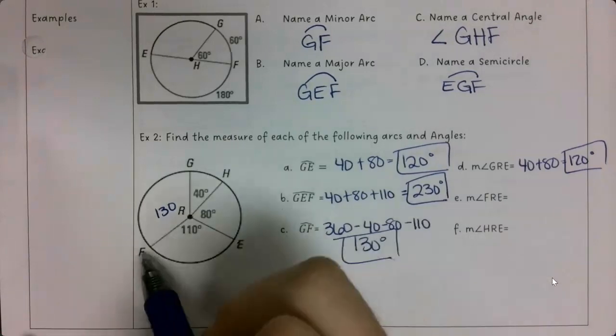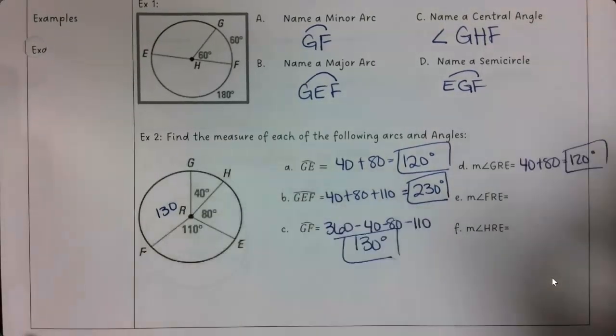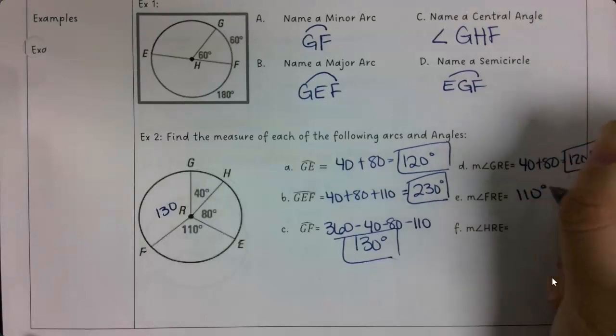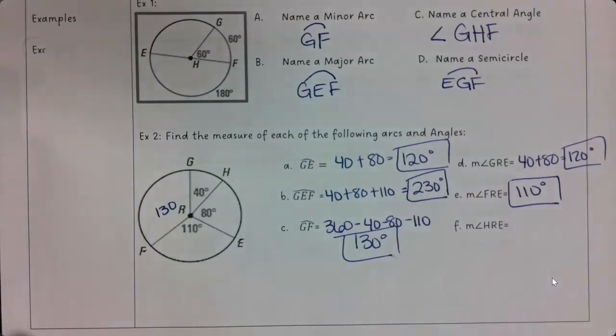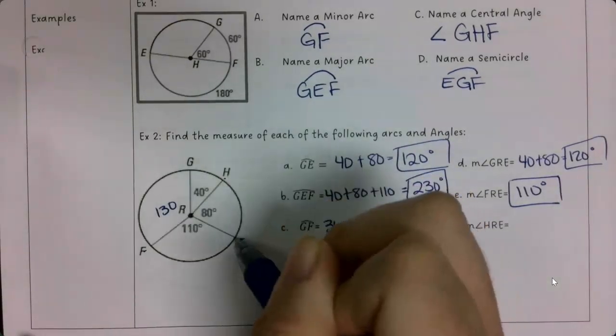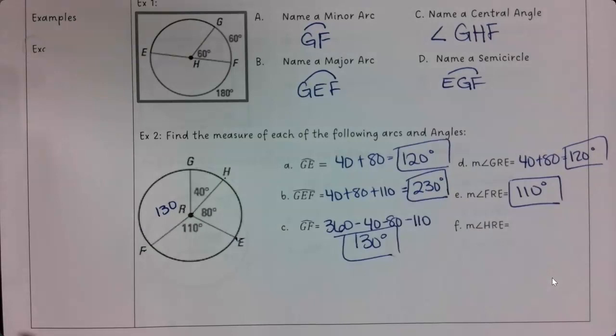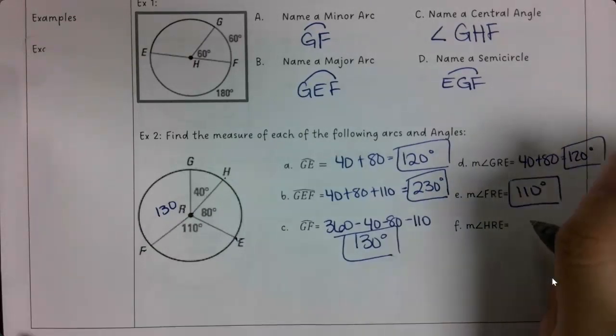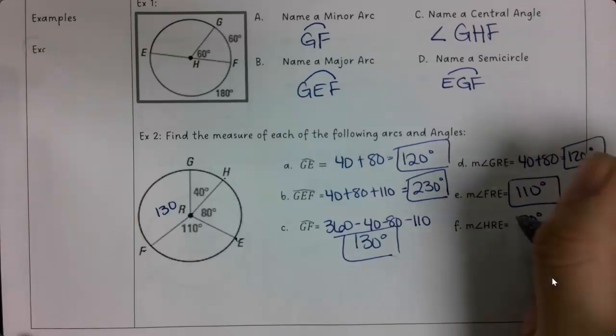Then the next one I have is FRE. So from here, here, here, that one's just labeled 110. And then HRE is from here, to here, to here. So that one is 80.